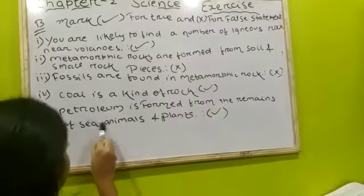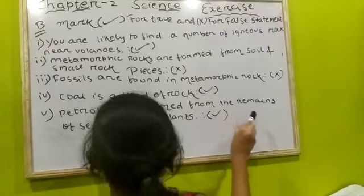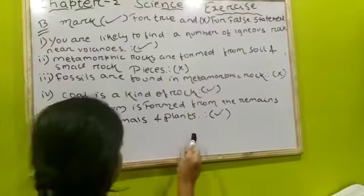Five number, petroleum is formed from the remains of sea animals and plants. The answer is true.